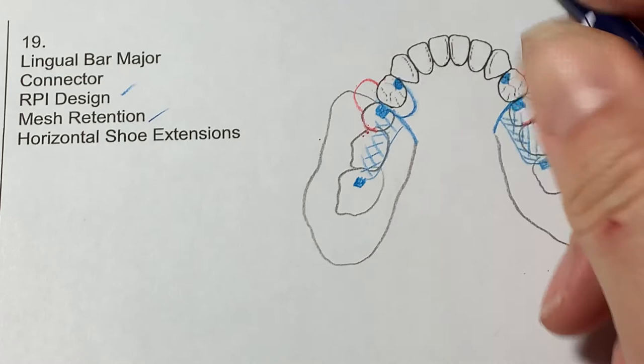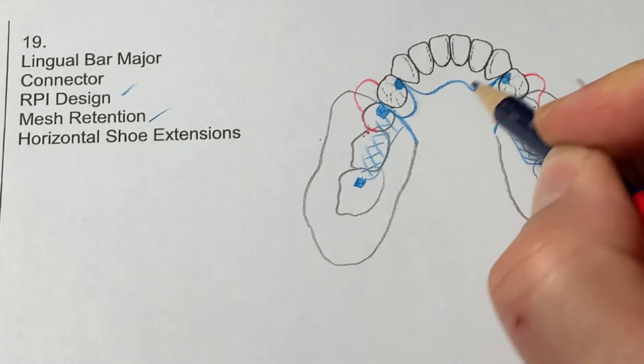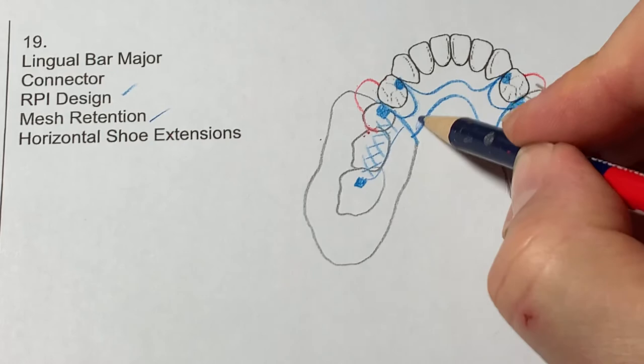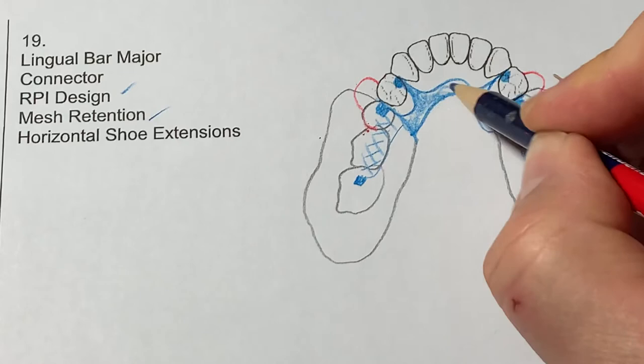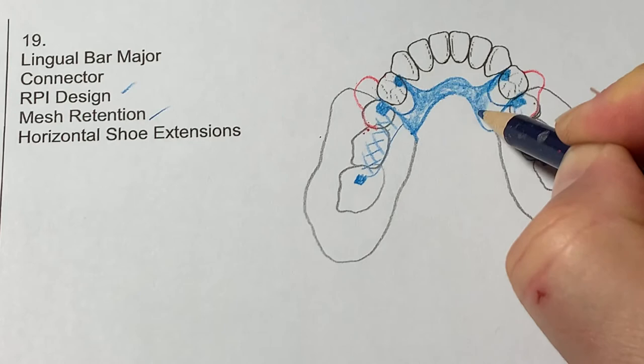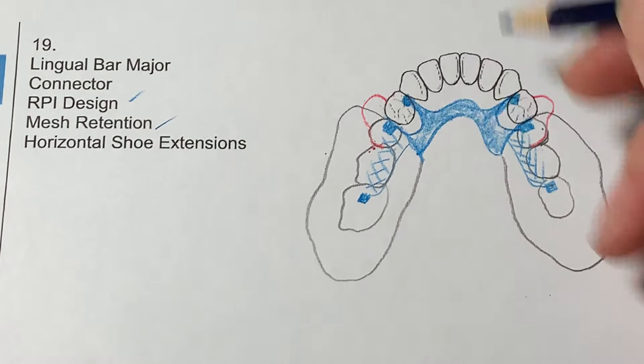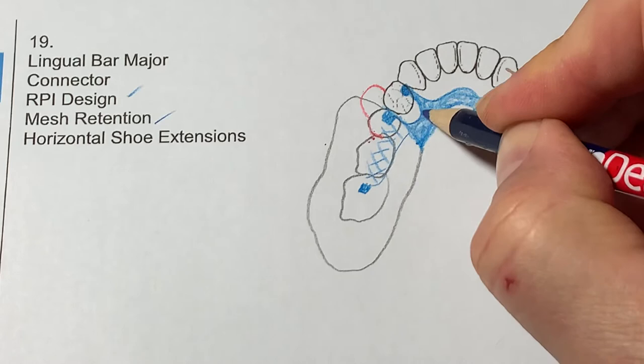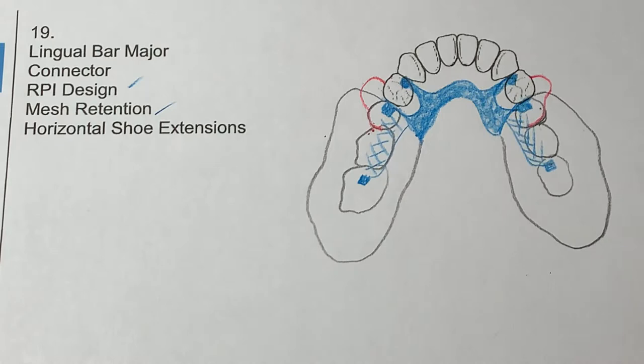Last but not least is the major connector, which is a lingual bar, which is 3 to 5 millimeters below the gingival margins. And then, as students, I ask you to shade it in. In private practice, you may not shade the major connector in, but this tells me that this is a solid piece of metal, and where it's not shaded is a window. So you can see south of the 3-4 and 4-4 is an open window, possibly 4 to 5 millimeters below the free gingival margin of 3-4 and 4-4.